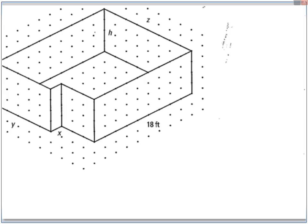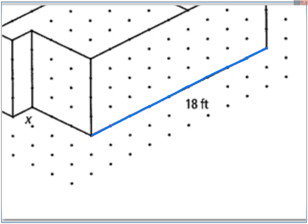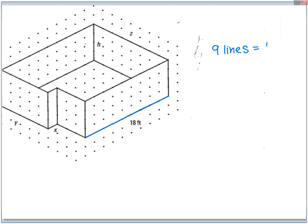So what we're going to use is a scale or a proportion. How many lines does it take - not dots, but how many lines does it take to get this 18 feet? One, two, three, four, five, six, seven, eight, nine. Did you guys catch that? So count the lines. Nine lines gave us 18 feet.